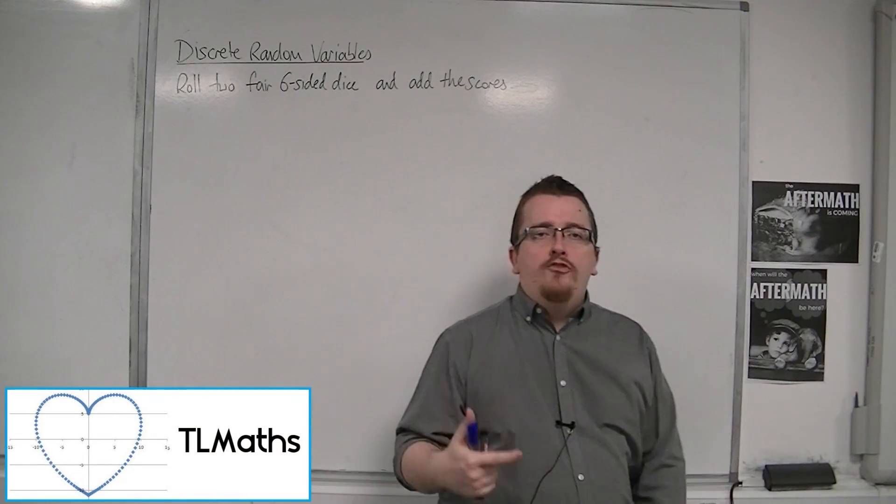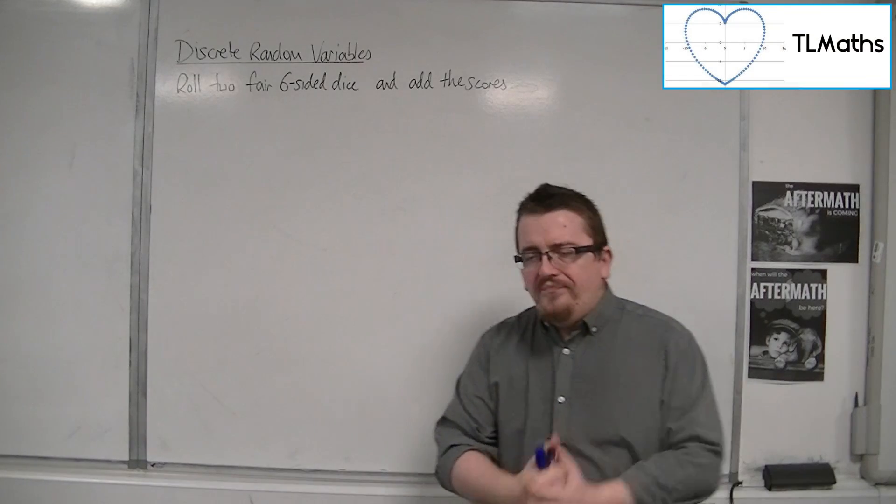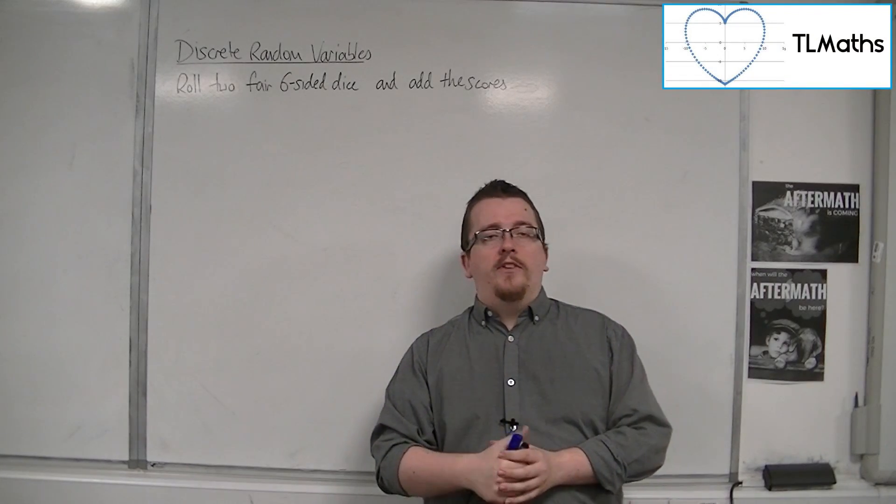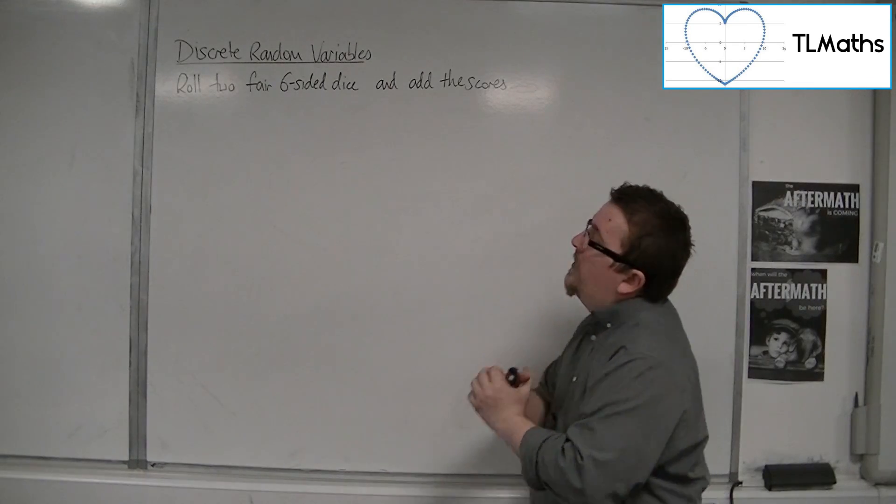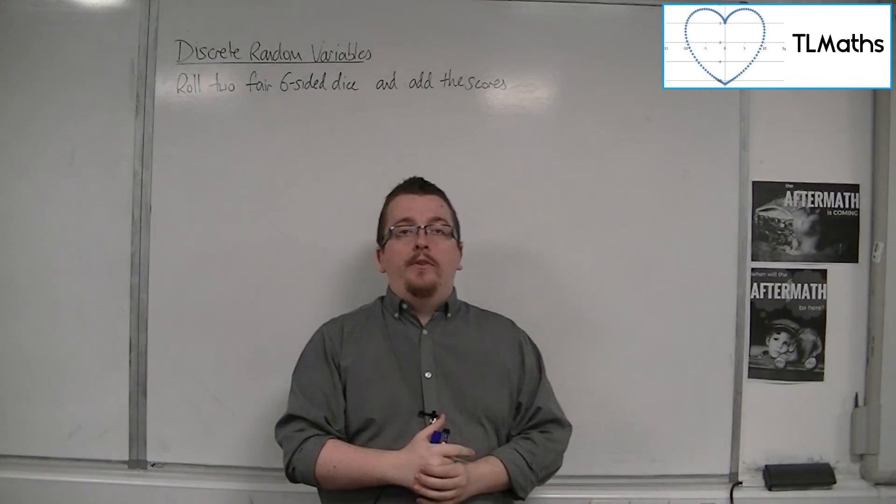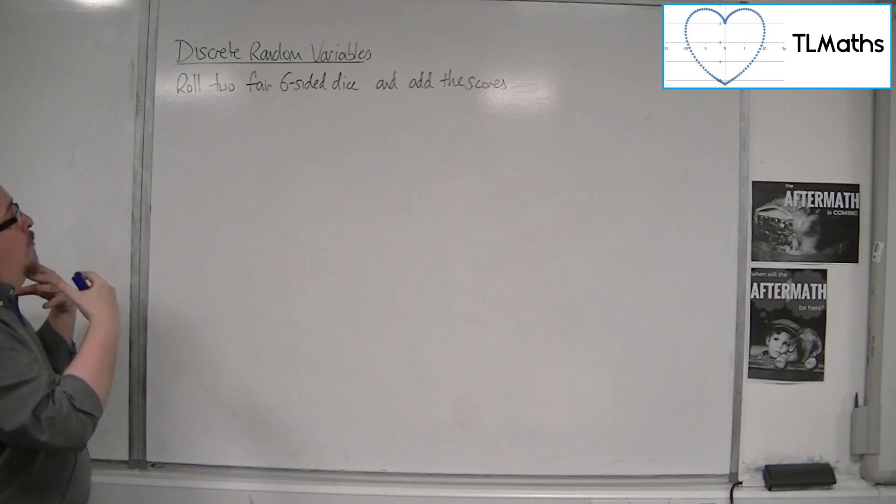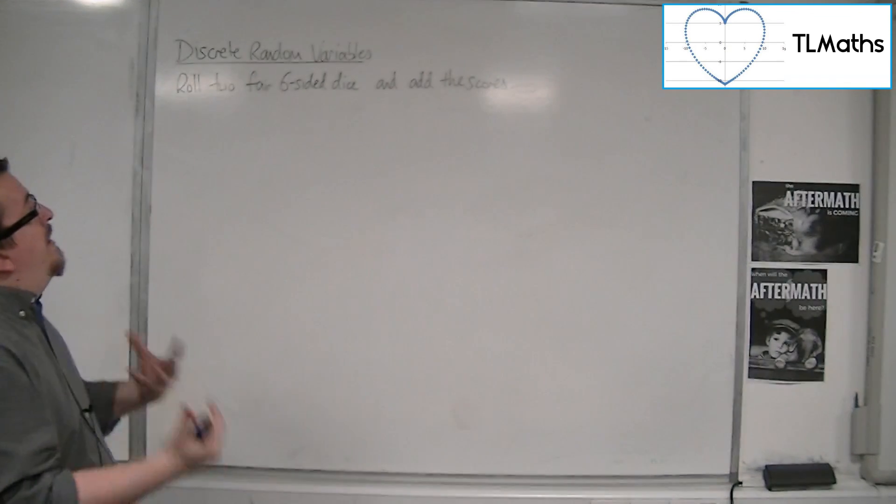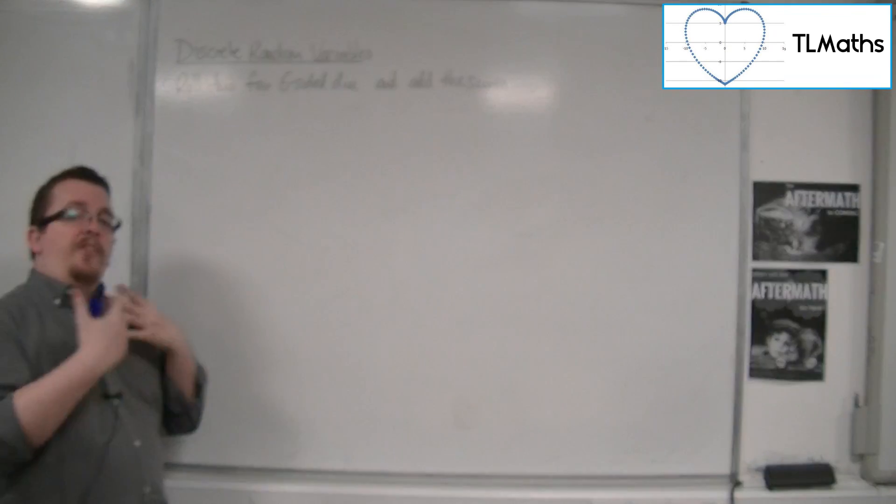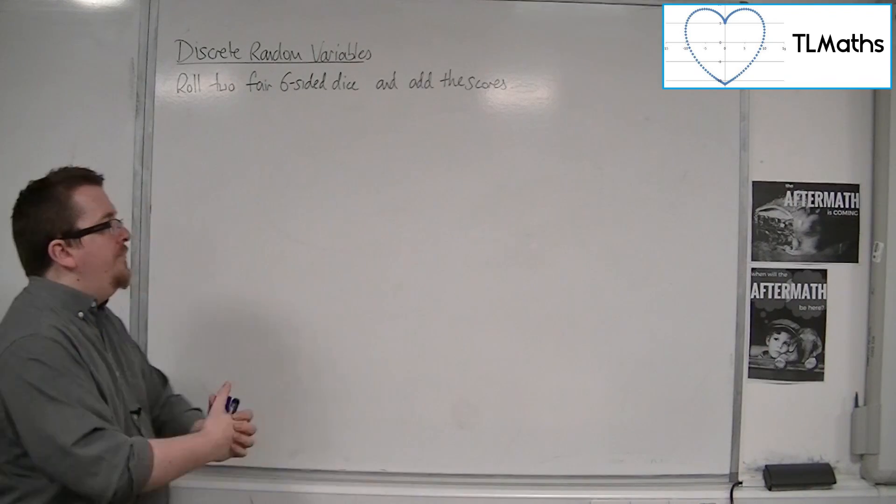In this video, I want to introduce discrete random variables. I'm going to look at a very basic example. We're going to be rolling two fair six-sided dice and just adding the scores.